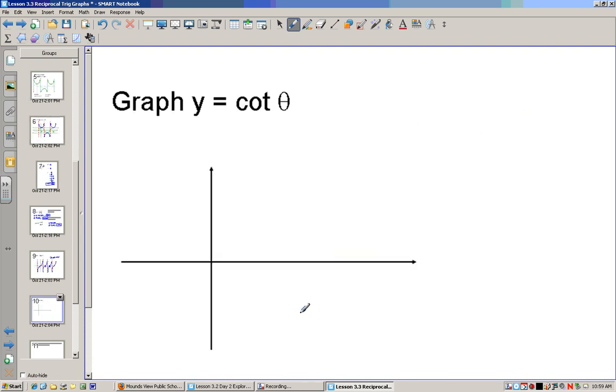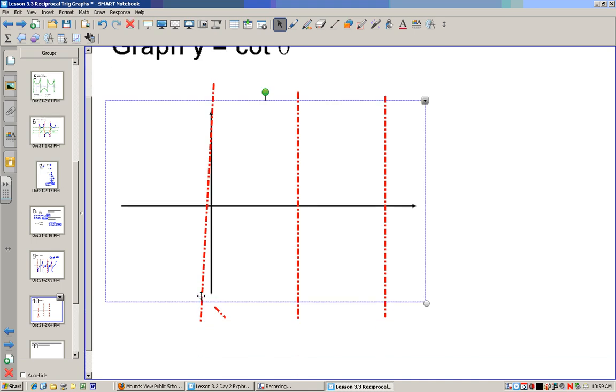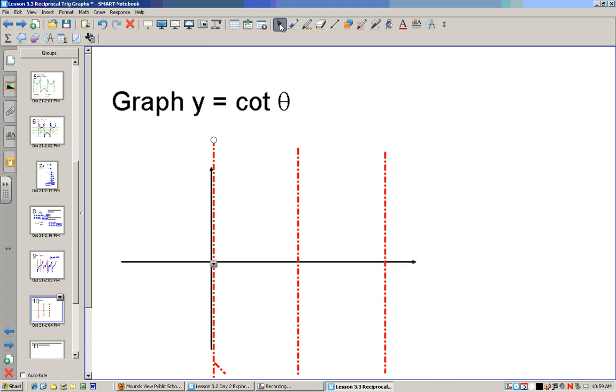Alright, let's graph cotangent. Now cotangent is undefined at zero, 180, 360. I have to fix that first line. Just so it doesn't look so wonky. Alright, here we go. Now it's defined at zero, or at 90, and 270 by being zero.